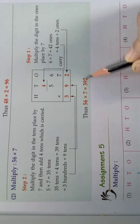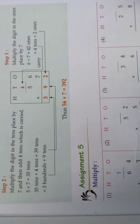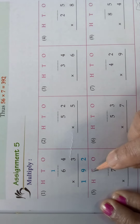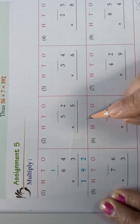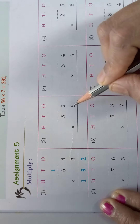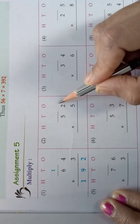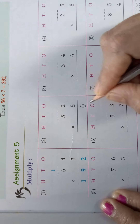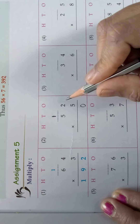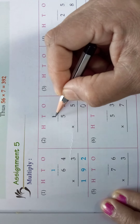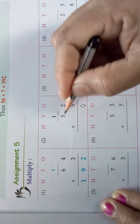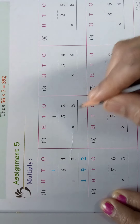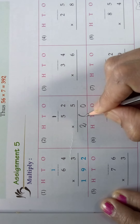Now we will do the assignment. Number 1 is done for you. The next one is 52 into 5, arranged in columns. Take the ones-place digit 2 — 2 fives are 10, so write 0 here and carry 1, because 10 is 1 ten. Now 5 fives are 25, plus the carry 1 is 26. So the answer is 260.